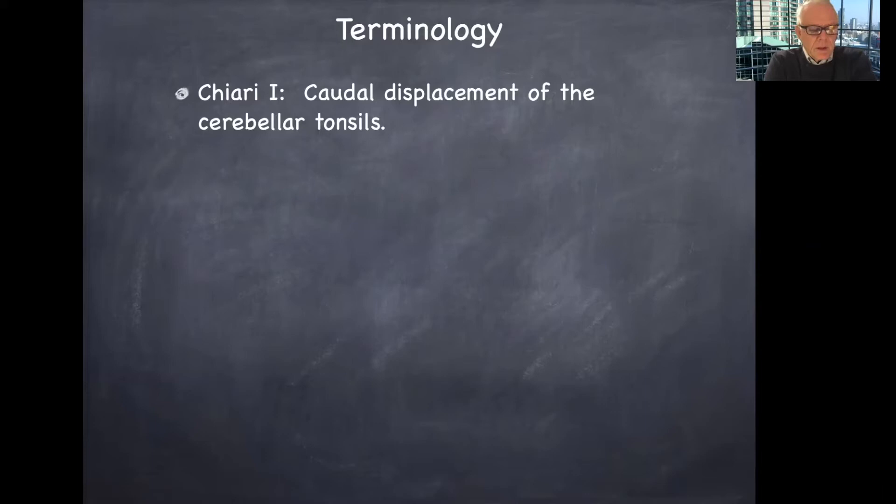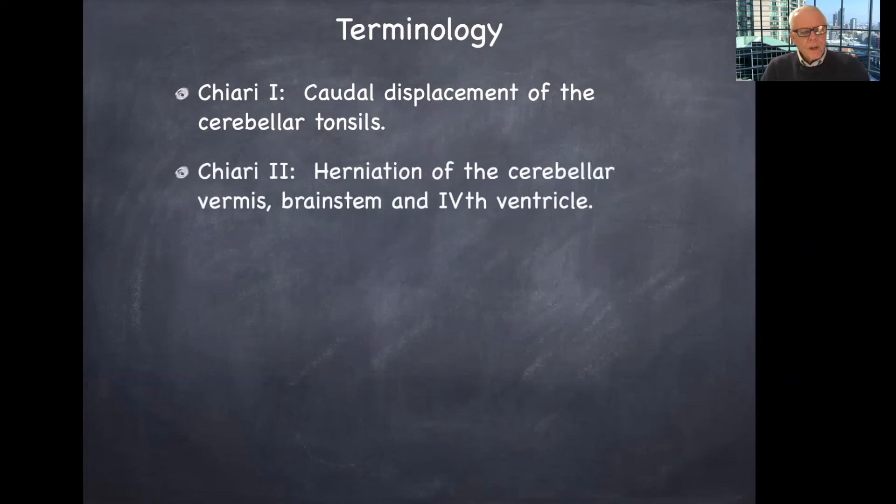There's a few different types of Chiari malformations and the one that you've been hearing most about, I'm sure this past series has been the Chiari 1, which is the caudal displacement of the cerebellar tonsils.